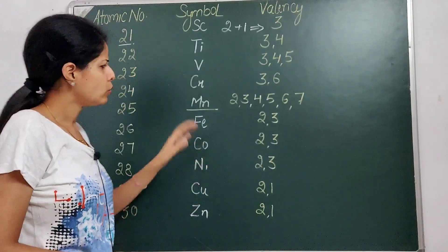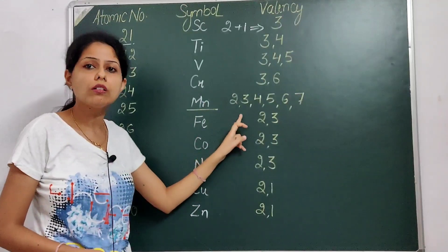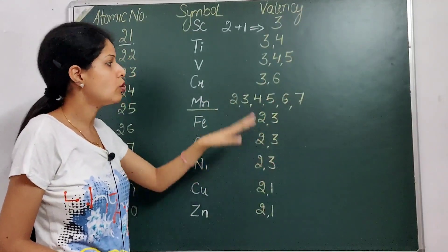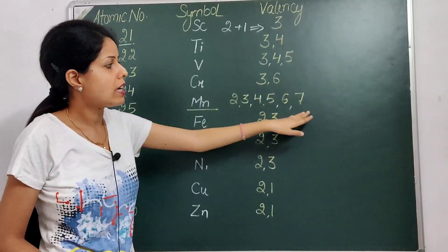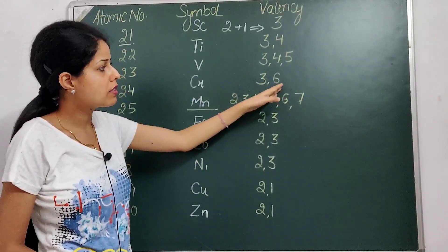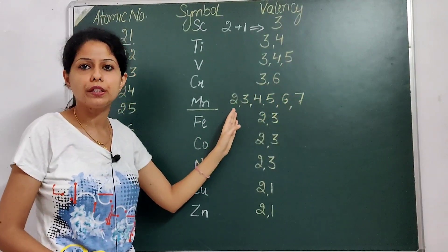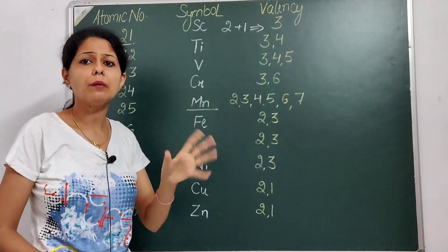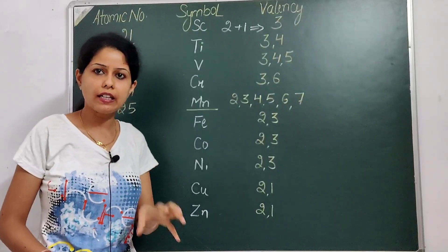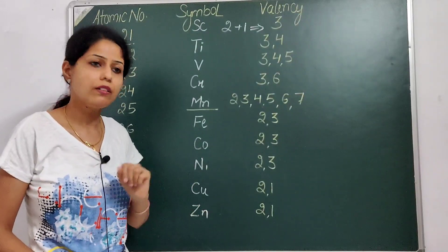Manganese shows many variable valencies: 2, 3, 4, 5, 6, and 7. You can see 3, 4, 5, 6 — then 7 naturally follows — and there is also a 2. Add one more, so the valencies become 2, 3, 4, 5, 6, 7. You can remember Manganese as a special element in the first transition series that shows the most variable valencies.